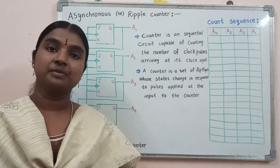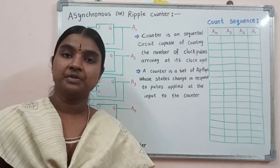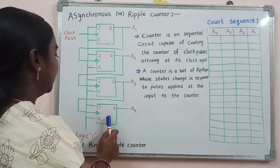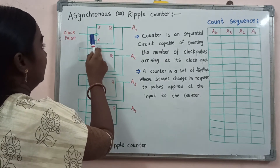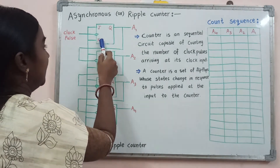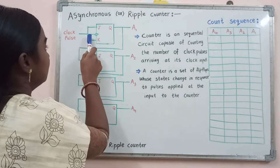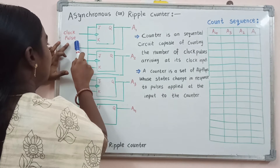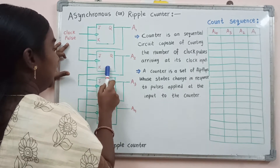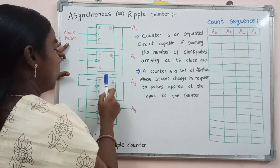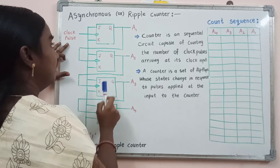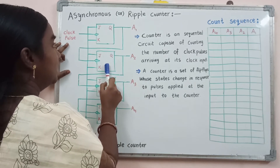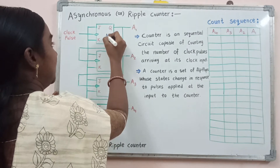Complementing type flip-flops means either we may consider JK type flip-flops or T type flip-flops. By looking at this logic diagram, the first flip-flop has JK inputs and the clock pulse from outside. For the first flip-flop only, we are going to provide the clock pulse from outside. The second, third, and fourth successive flip-flops can be triggered by the previous output of the flip-flop. The second flip-flop can be triggered by the output of the first JK type flip-flop.